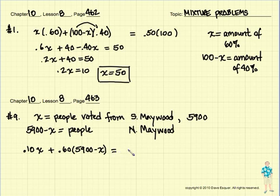So we had 10% of the people from Southern Maywood plus 60% of the people from Northern Maywood. And when we were all done, we ended up with a population of people who were 55% who voted for it. And that was of the population 5,900.